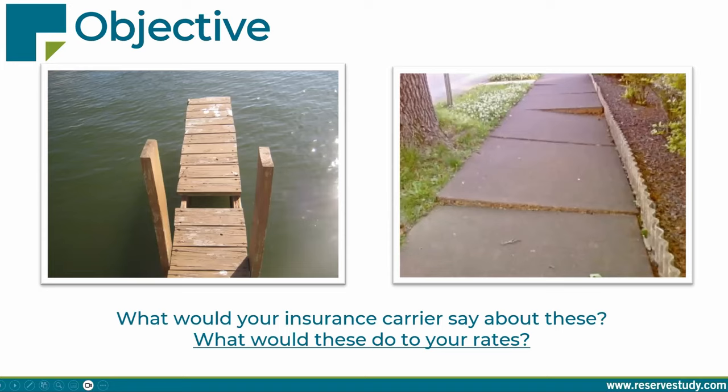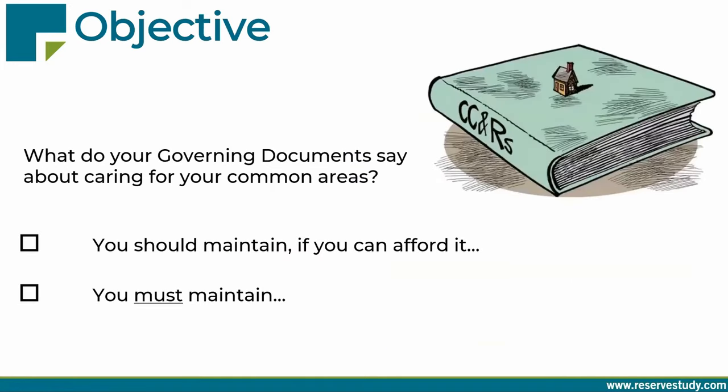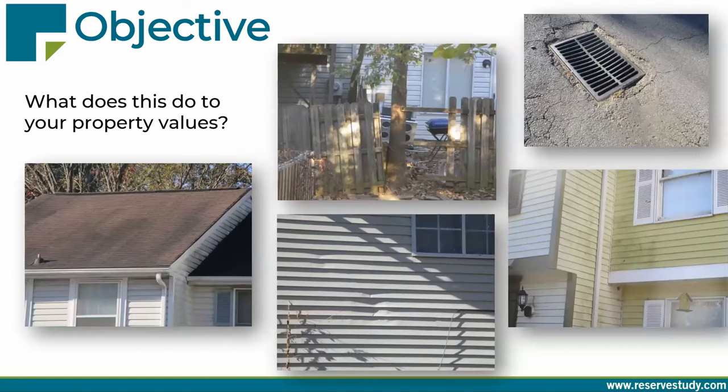Think for a moment what your governing documents say about your responsibilities to care for the common areas. Do they say you should maintain the common areas if it's not too expensive, or that you actually must maintain them? Your governing documents require the board to maintain the common areas on behalf of the owners. Owners maintain their separate spaces, and the board has a responsibility to maintain the common areas and set the budget so the common areas are sustainable.